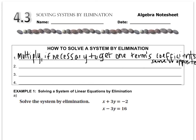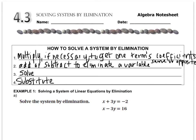The first thing you want to do is multiply, if necessary, to get one term's coefficients either the same or opposite, meaning either they're both positive three or one is positive three and the other is negative three. Once you've done that, you want to either add or subtract to eliminate a variable. So if you've done step one properly, then one of the variables will cancel. Then you solve whatever's left and substitute the value from step three to get the other variable.